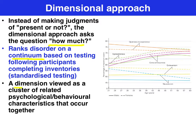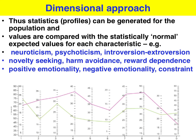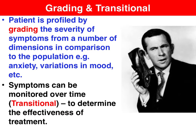A dimension is viewed as a cluster of related psychological or behavioural characteristics that occur together. Thus, profiles on a number of dimensions can be established for the population. And for a mental health patient, the values scored on their inventories can be compared to the normal population, which enables the mental health clinician to grade the severity of symptoms on a variety of dimensions.